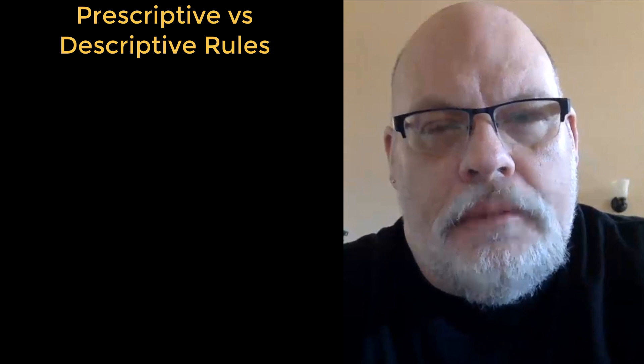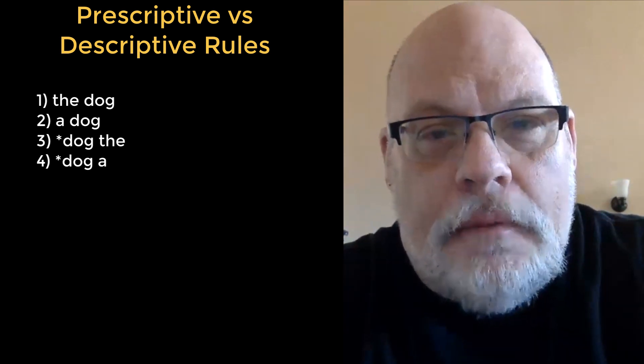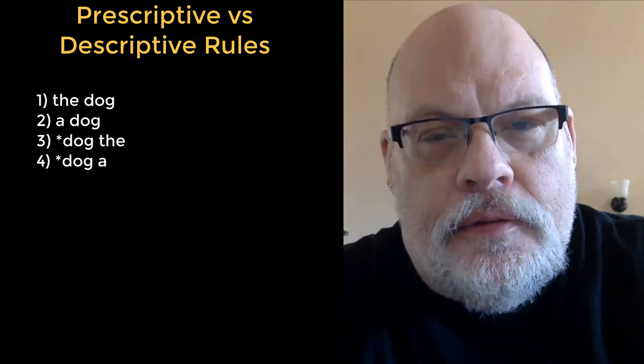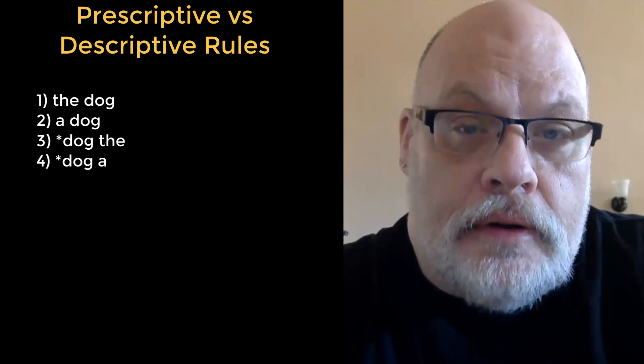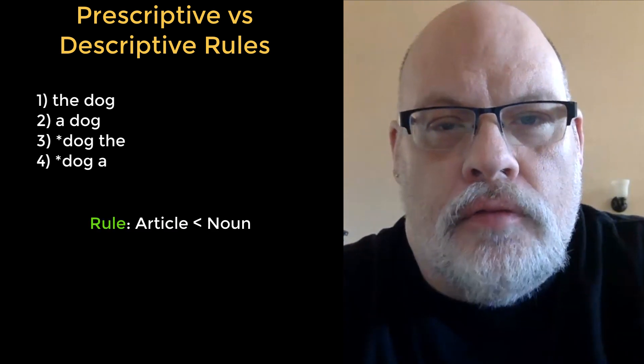For example, we can observe that in English, an article always appears before its noun. So we can write a rule that describes that fact. We can say articles appear before nouns. That's what syntacticians mean when they say rules.